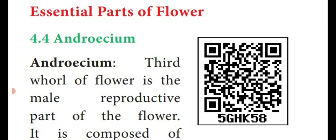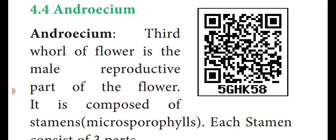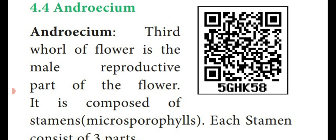So here first we are going to see androecium. Androecium is the third whorl of a flower and also the male reproductive part of a flower. This androecium consists of individual units known as stamens. These stamens are otherwise known as microsporophylls. Stamens are otherwise known as — what is that one? — microsporophylls.